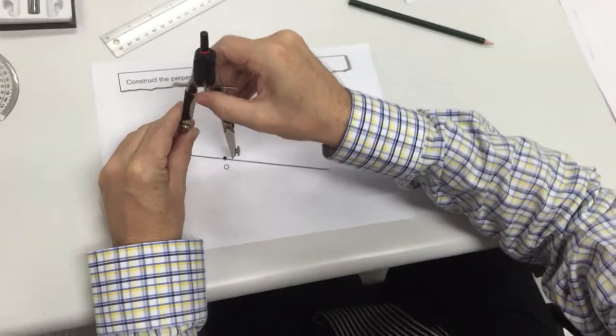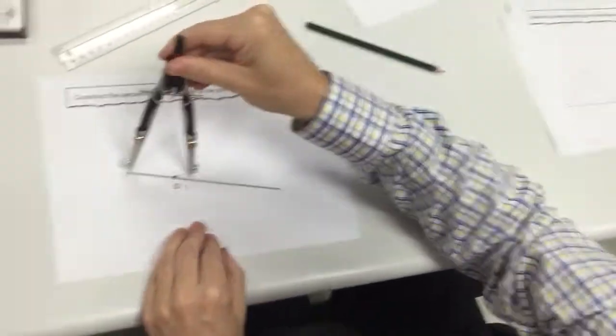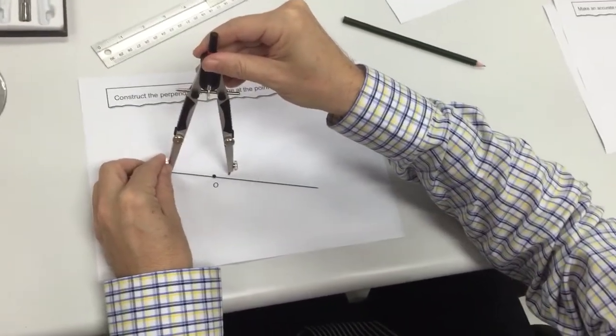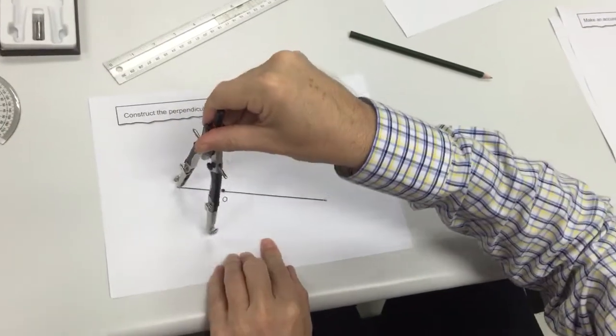Making sure that your compass is more than halfway. It has to be more than halfway. Put the point on this arc here. Draw an arc. And draw an arc this side as well.